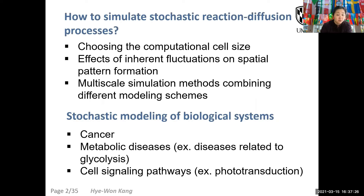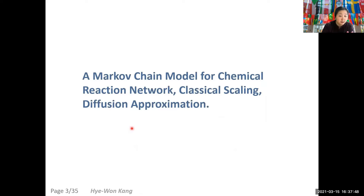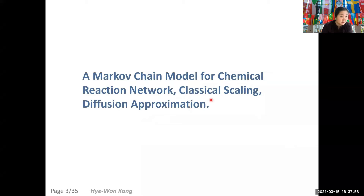The first approach is to derive an approximate model using multi-scale approximation. The second is to decide appropriate spatial resolution in reaction-diffusion processes. Finally, we can accelerate simulation by using a multi-scale simulation model. Among those three, I will introduce the first approach during the talk using simple examples. In the showcase model for biochemical reaction networks, we assume the system is well mixed, and we focus on how the copy numbers of certain species change over time.